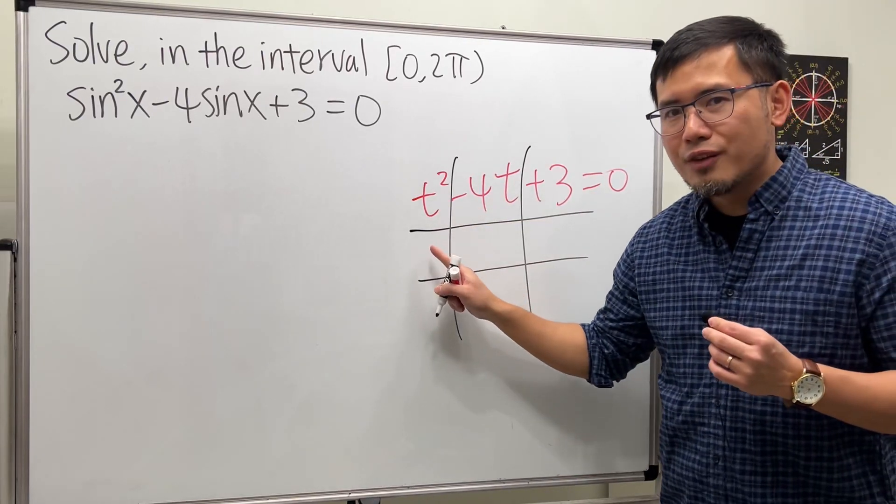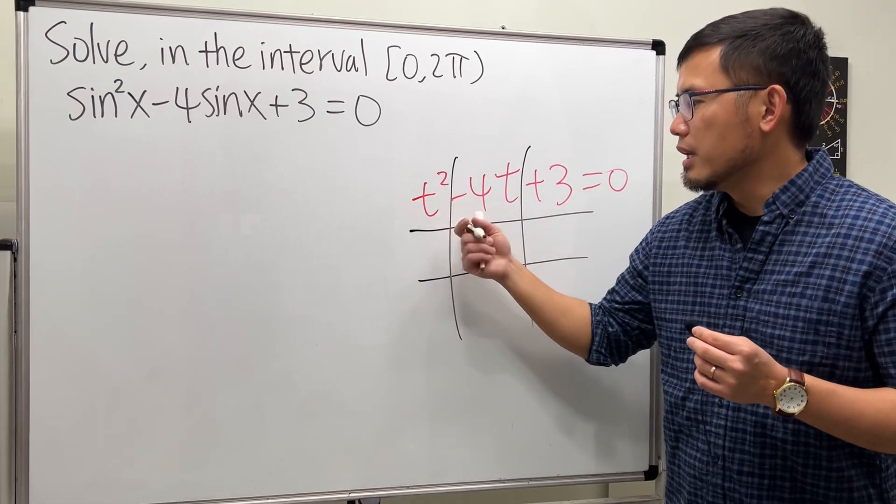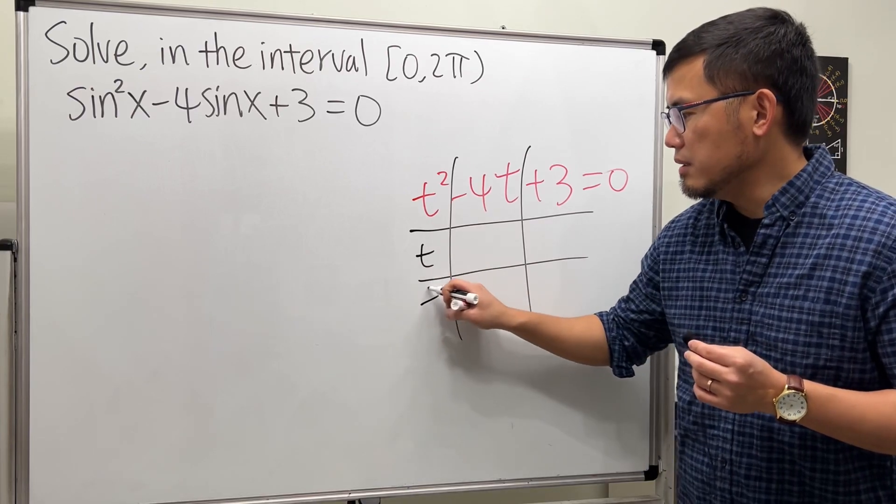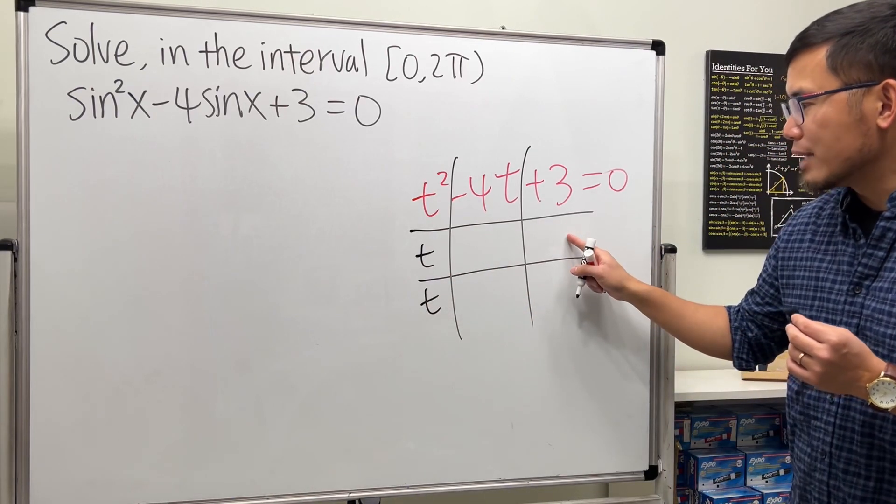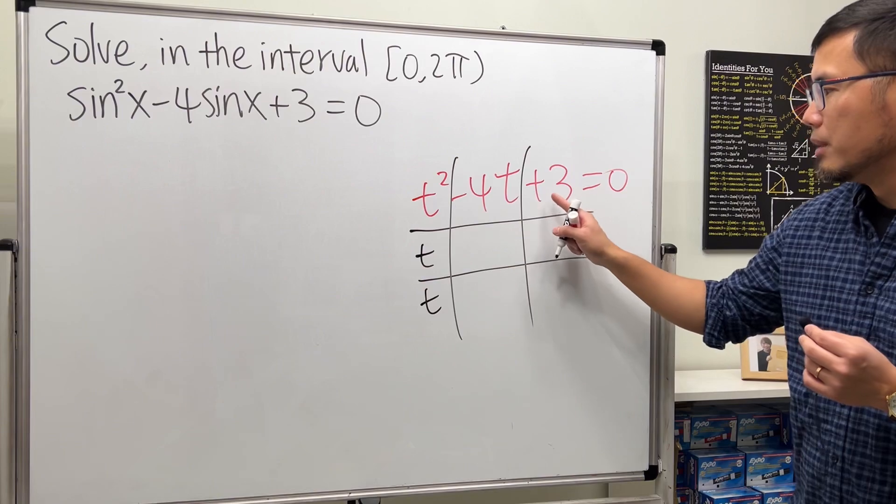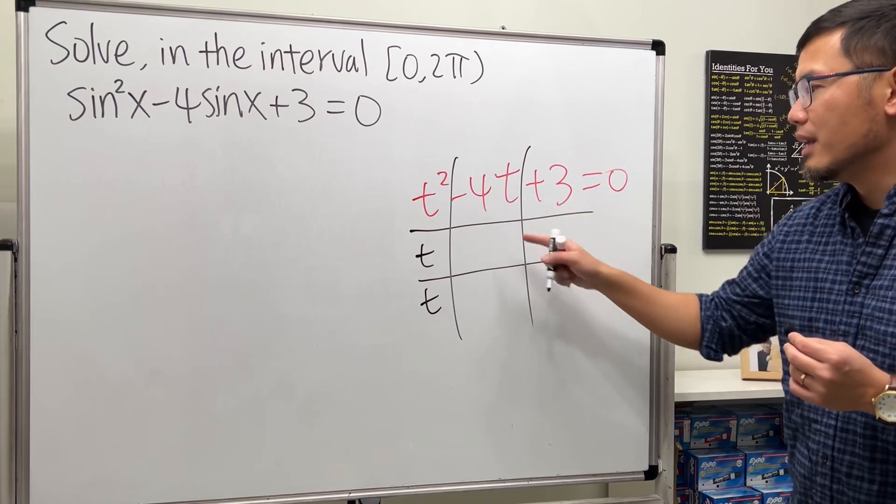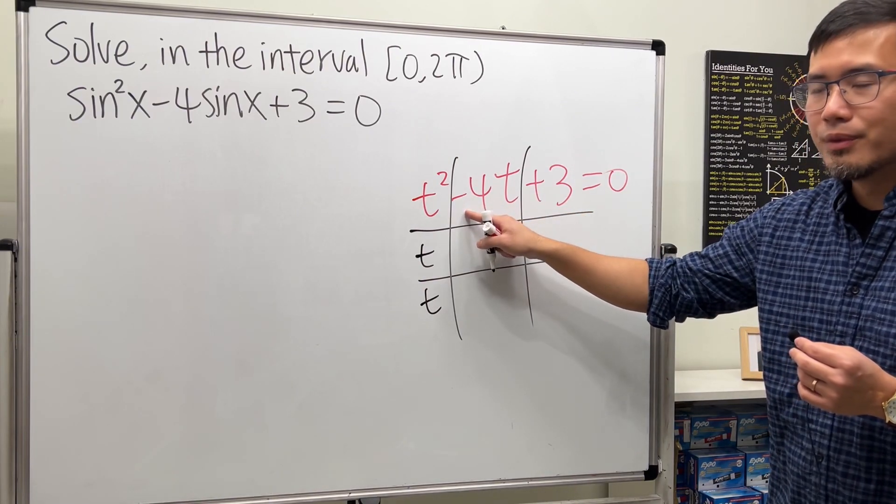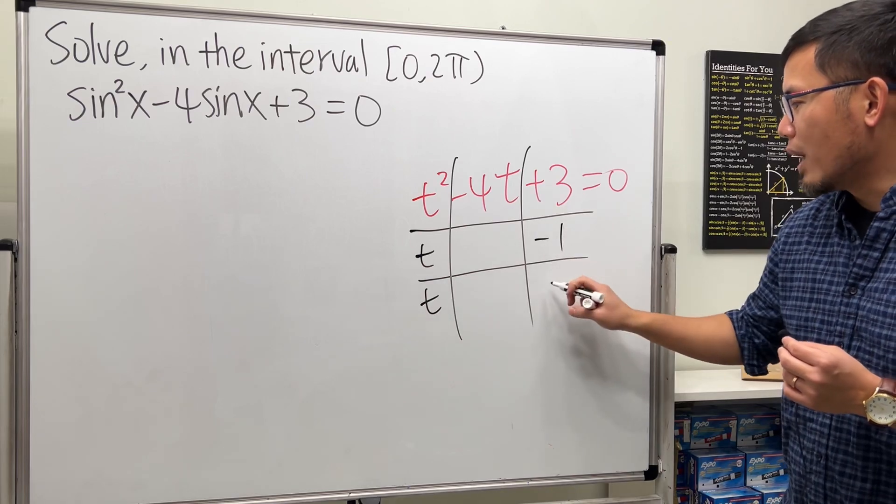You ask yourself what times what will give you t squared, and the answer for that is t and t. And then you ask yourself what times what will give you positive 3? And together they will add up to negative 4. The answer for that is negative 1 and negative 3.